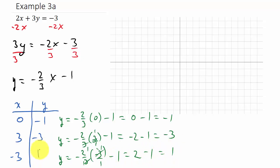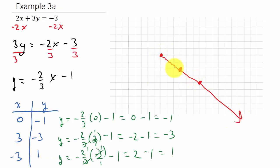Plot the points: (0, -1) right here; (3, -3) — over three, down three; and (-3, 1) — over negative three and up one. Connect them and there's the line. I hope the video helped — check out the other videos on finding x and y intercepts and using slope. Thanks for watching, give a like, share, and subscribe!